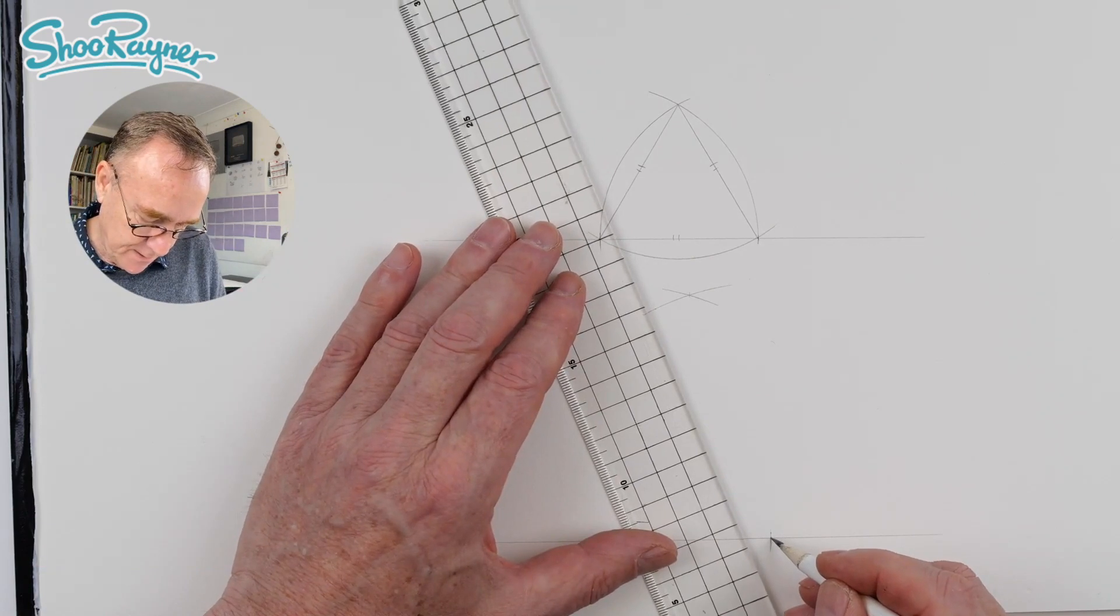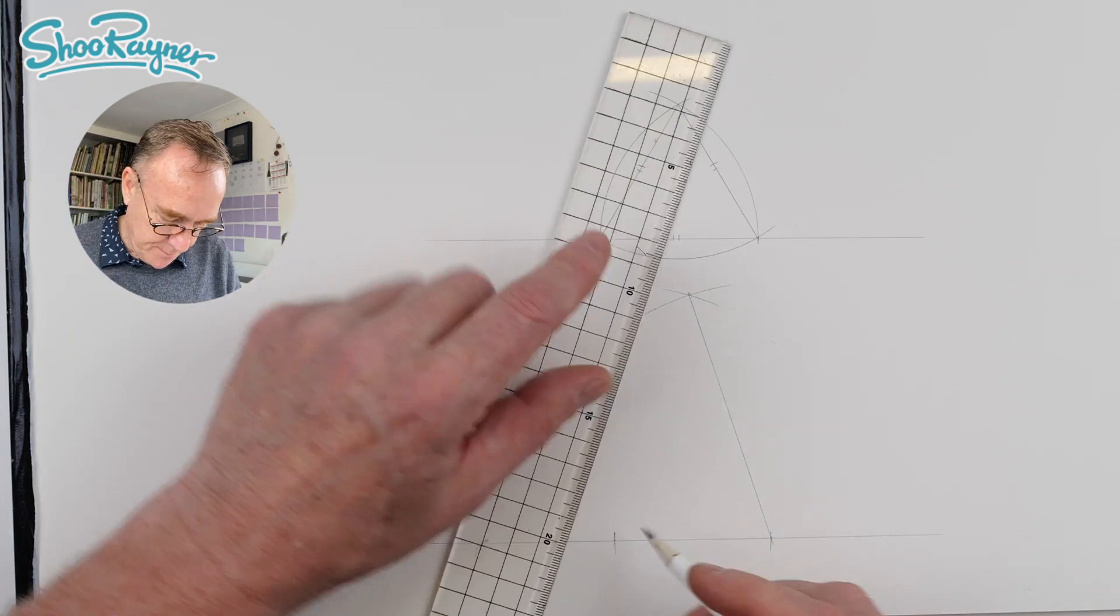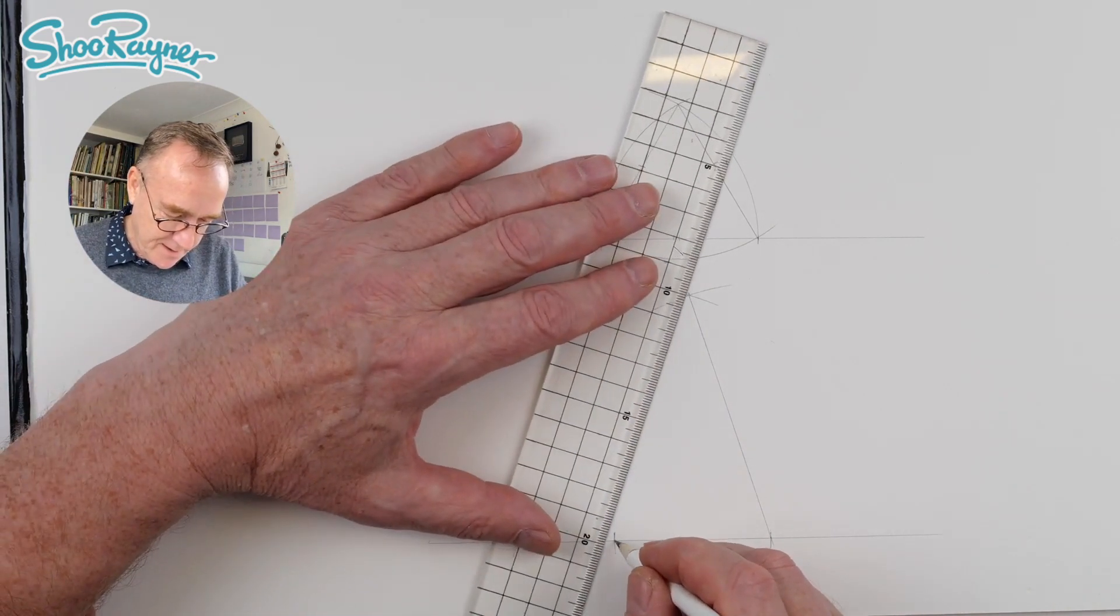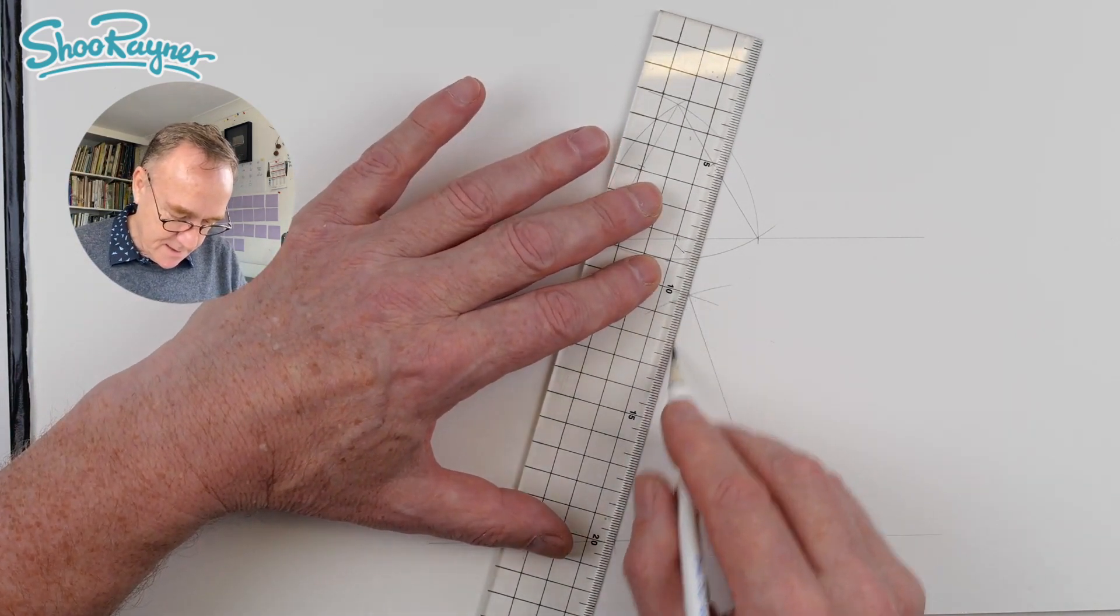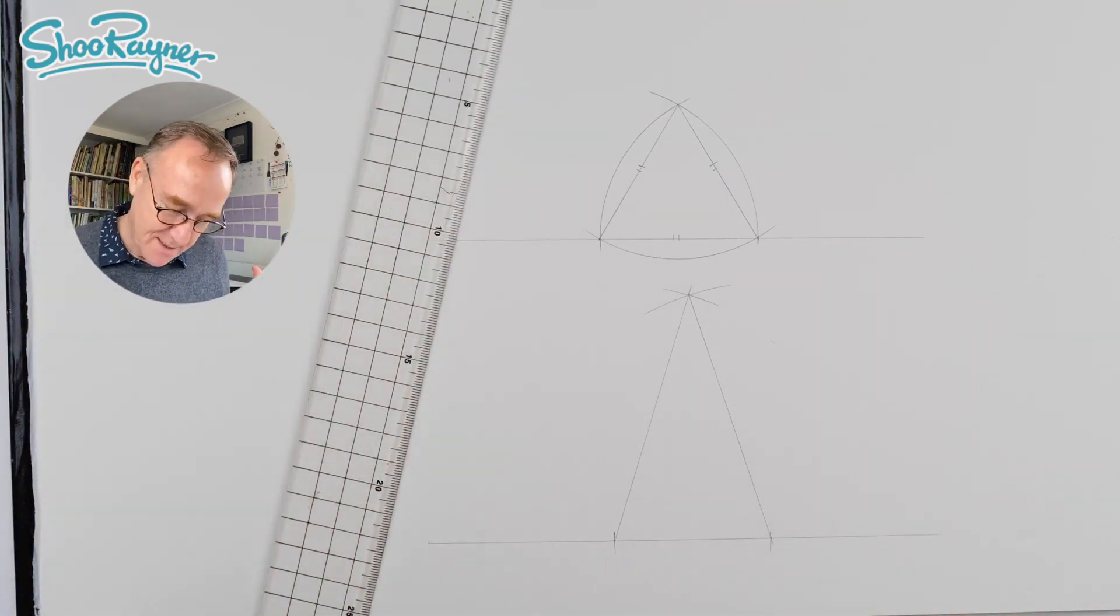So what we need to do is join them up like that, would be better with the other side of the ruler. Let me join them up like that and there we have a perfect isosceles triangle.